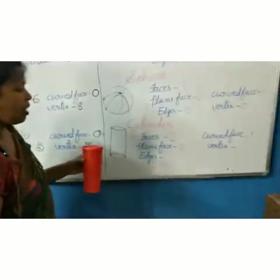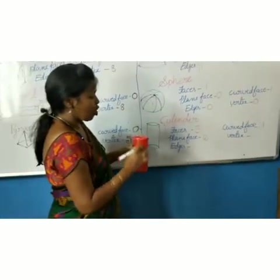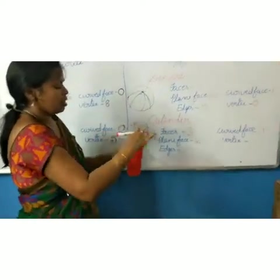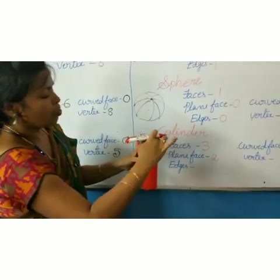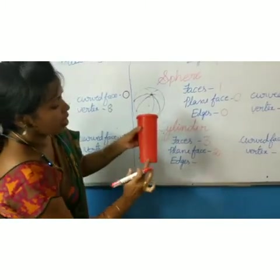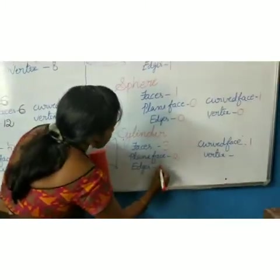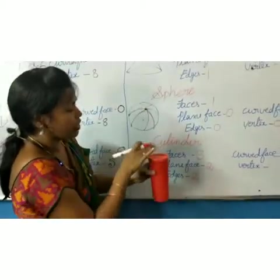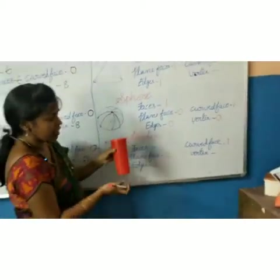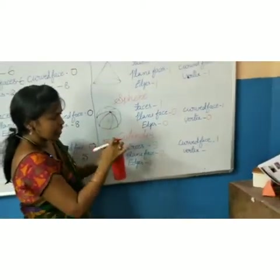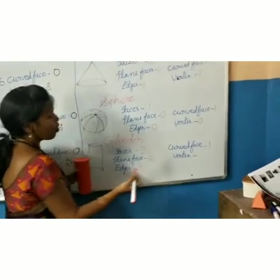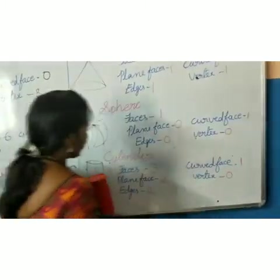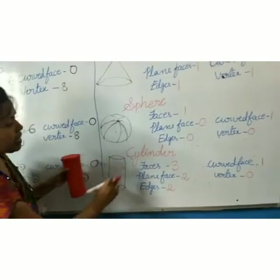See children, edges. How many edges it has? Two edges. This is one edge and another one. So how many edges? Two edges. Is there any vertex, children? Is there any corner? No. So what should be written here? Zero.